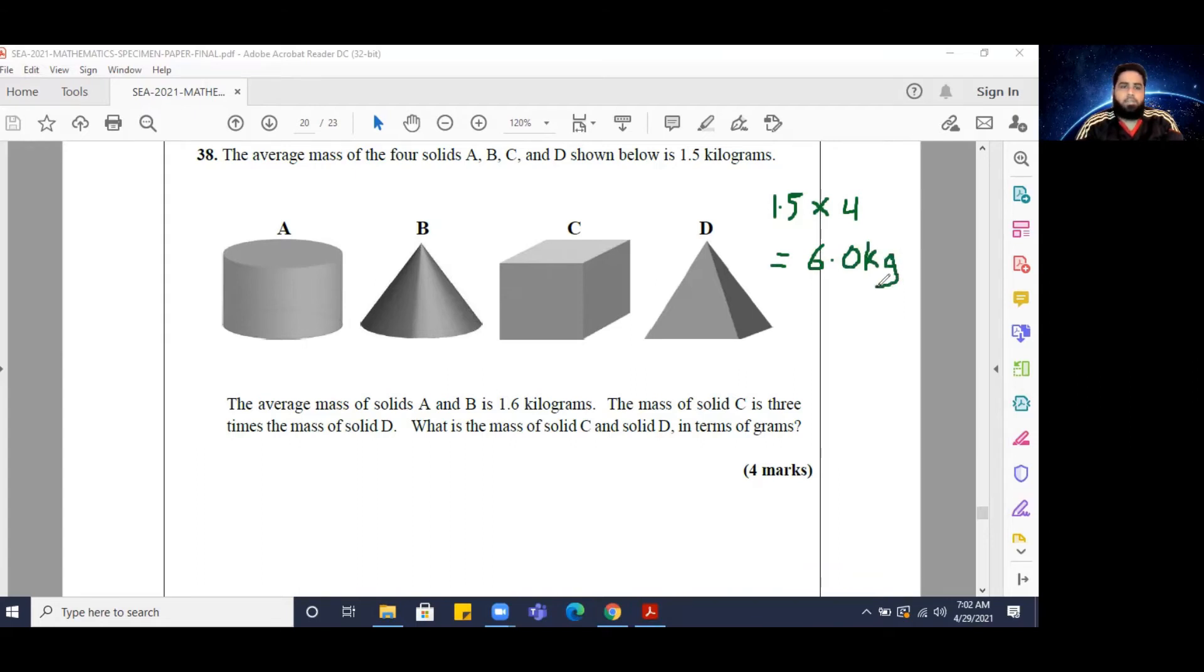Then further we are told that the average mass of solids A and B, so if we took the average of the solids A and B alone, it would be 1.6. That means the combined mass of A and B divided by 2 is equal to 1.6. So if I multiply 1.6 by 2, we're going to get back the combined mass of solids A and B, which is 3.2 kilograms.